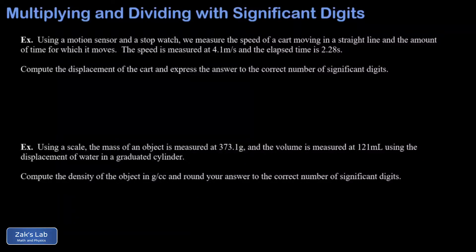In this video we review the rules for multiplying and dividing numbers when we're keeping track of significant digits. The rule for multiplication and division is simple: we just round the final answer to the same number of significant digits as the participant with the fewest number of significant digits.